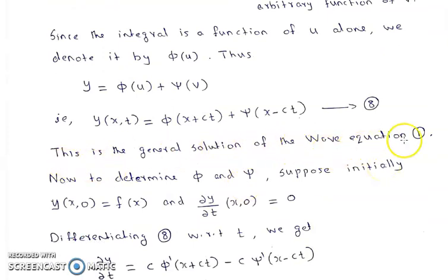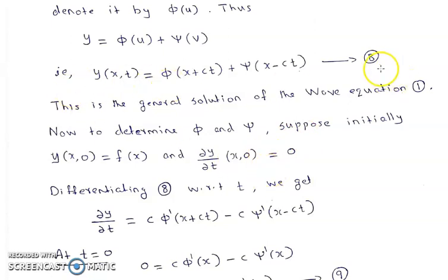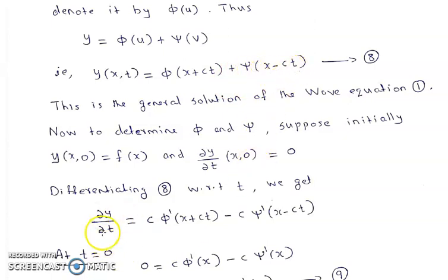Now we find φ and ψ using initial conditions: y(x,0) = f(x) (initial displacement) and ∂y/∂t at t=0 equals 0 (initial velocity is zero). Differentiating equation 8 with respect to t: ∂y/∂t = φ′(x + ct)·c + ψ′(x − ct)·(−c), that is ∂y/∂t = c·φ′(x + ct) − c·ψ′(x − ct).